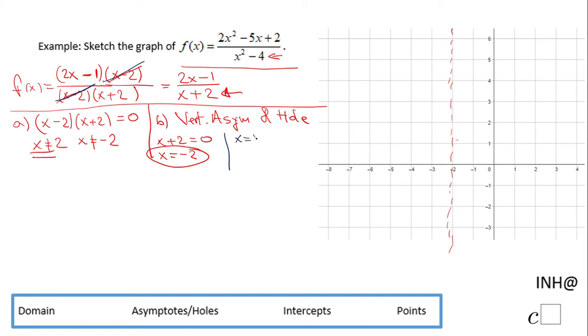x equals 2 is a hole. The function is not defined. This doesn't go asymptotically.